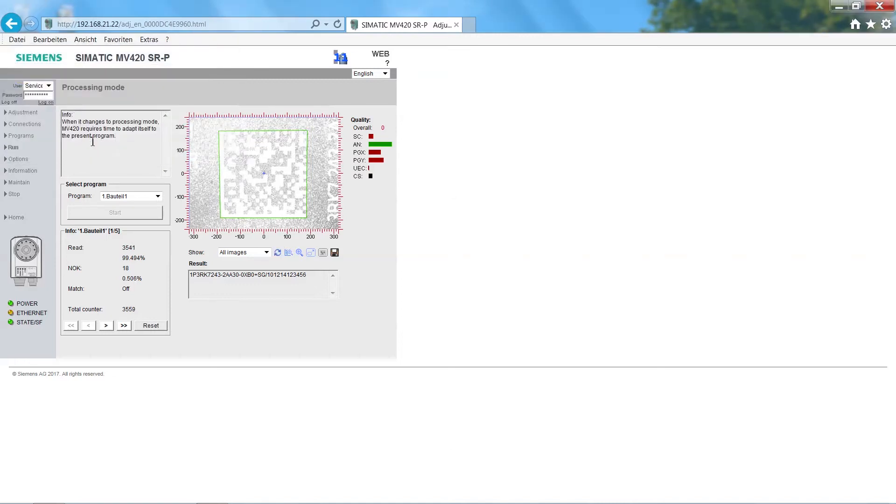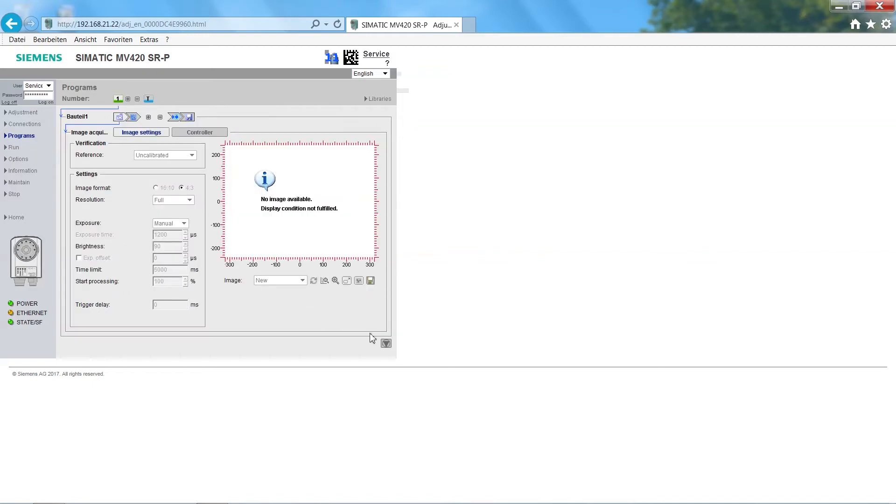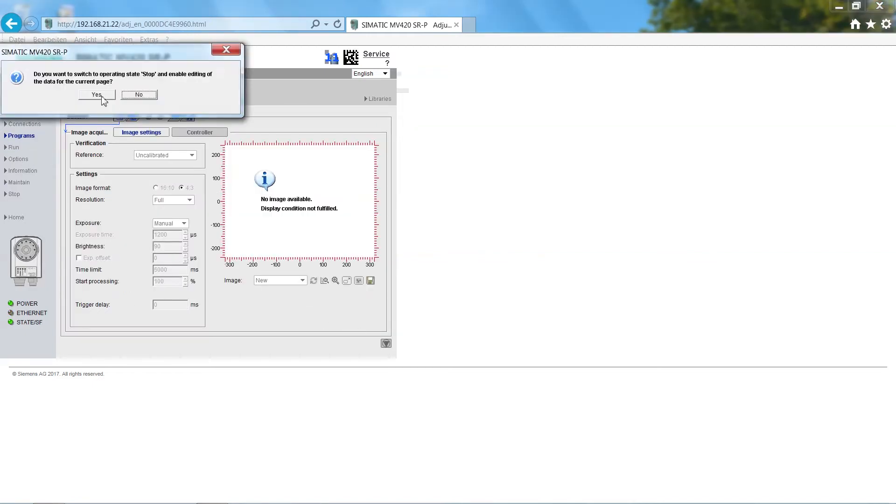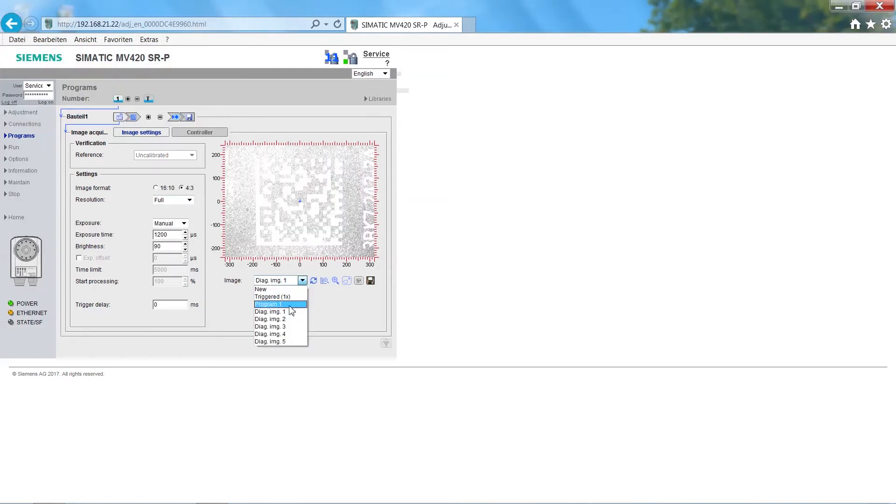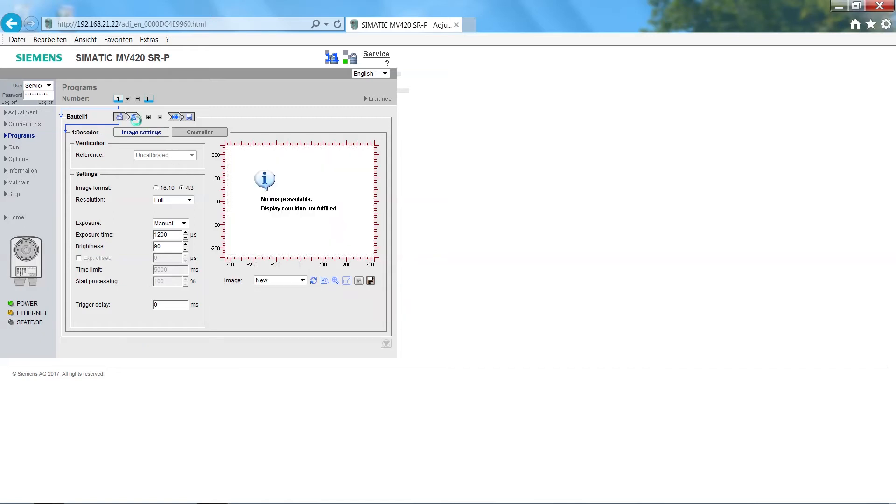I'll take a look at the error cache. Okay, there are several reading errors. Let me just switch over to the diagnostics images. It appears as if the surface of the workpiece has changed, so the exposure is no longer correct. But that's not a problem. The MV420 can also handle changes in exposure. I'll quickly make the adjustment.